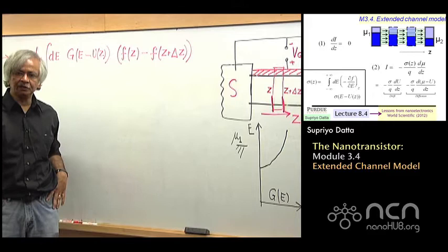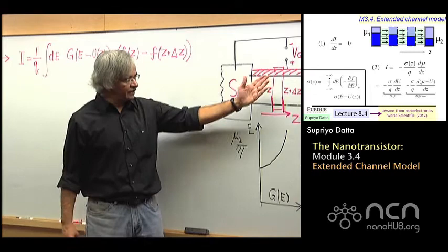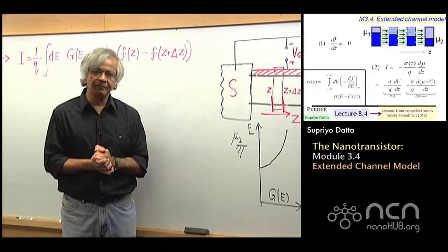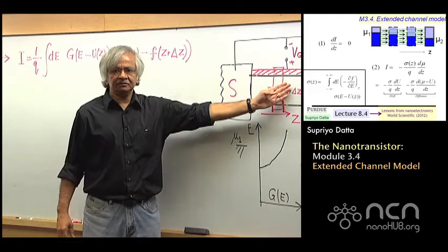In general, these functions do not need to be Fermi functions, because a Fermi function is a property of something at equilibrium. Usually what one assumes is that in a device, the contacts — the source and the drain — are big regions which always remain in equilibrium.